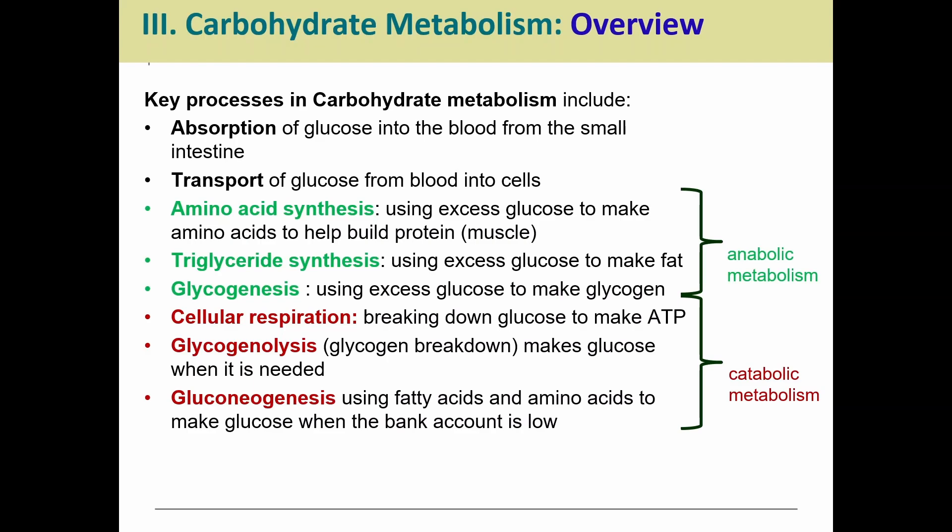Everything in green — the first three: amino acid synthesis, triglyceride synthesis, and glycogenesis — those are all anabolic; we're building up something bigger. Everything in red — cellular respiration, glycogenolysis, and gluconeogenesis — those are all catabolic; we're breaking something down.